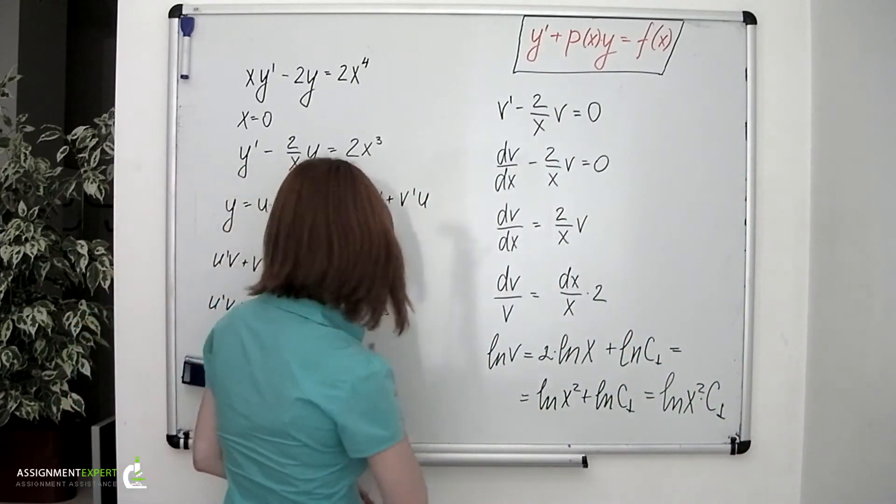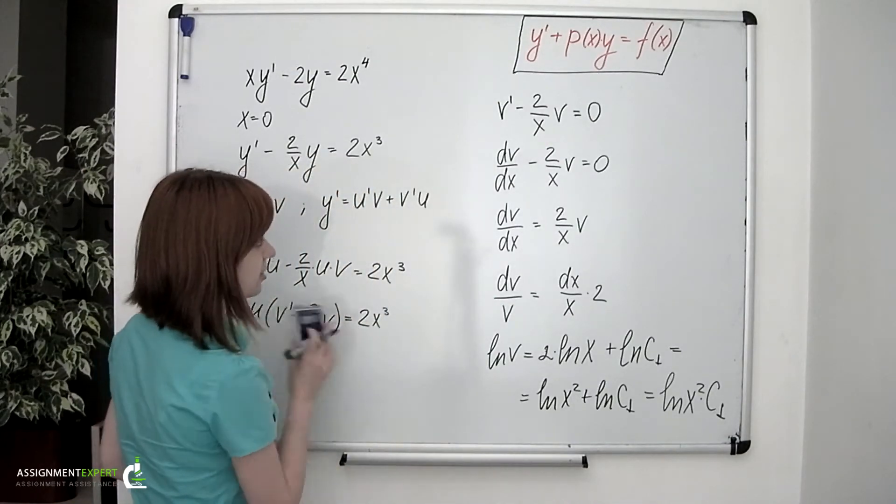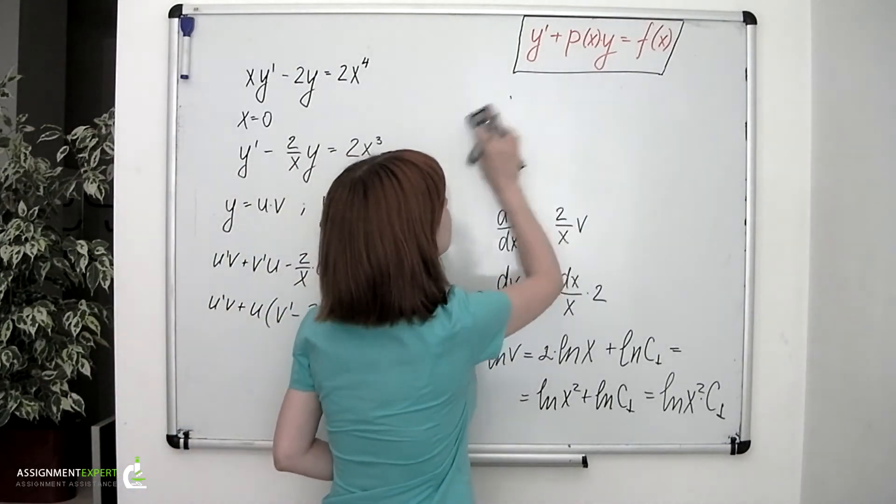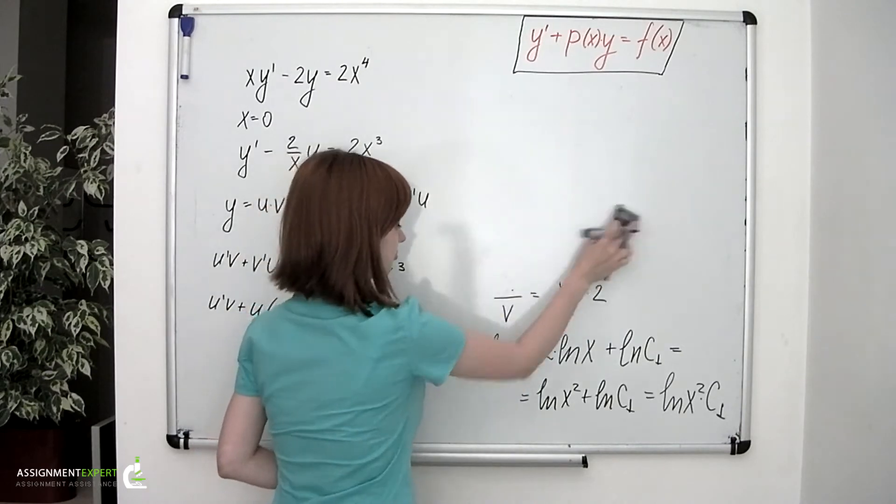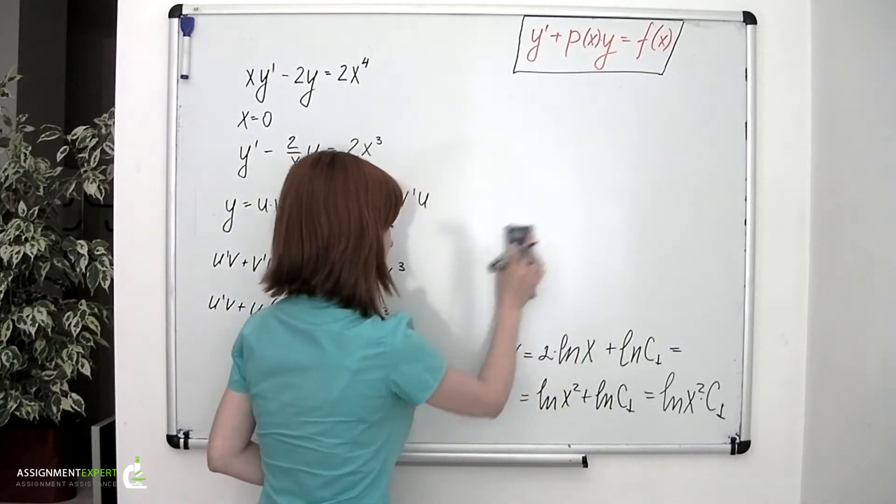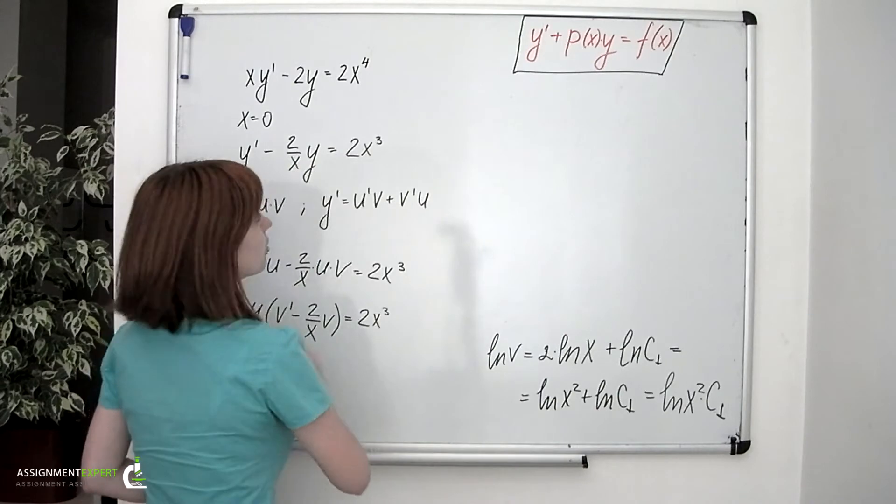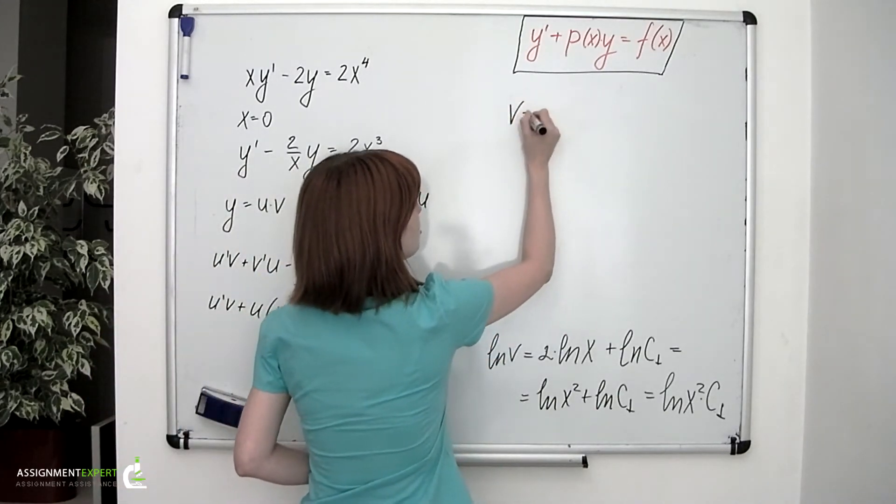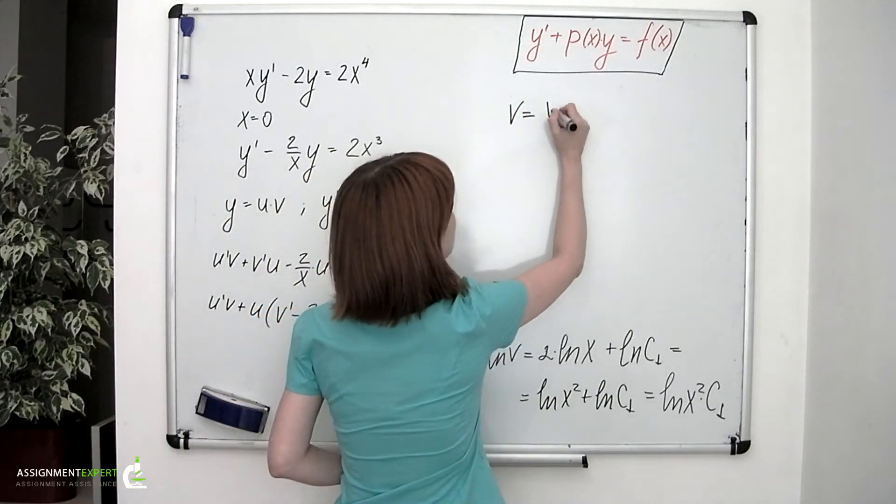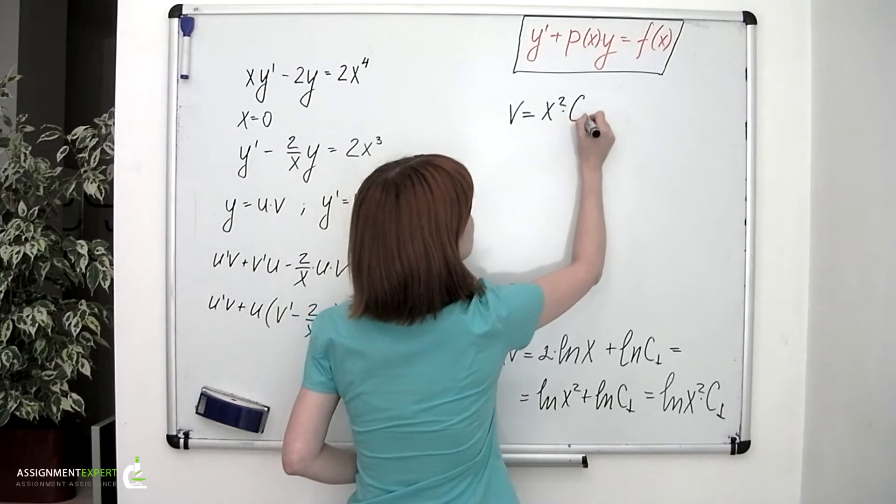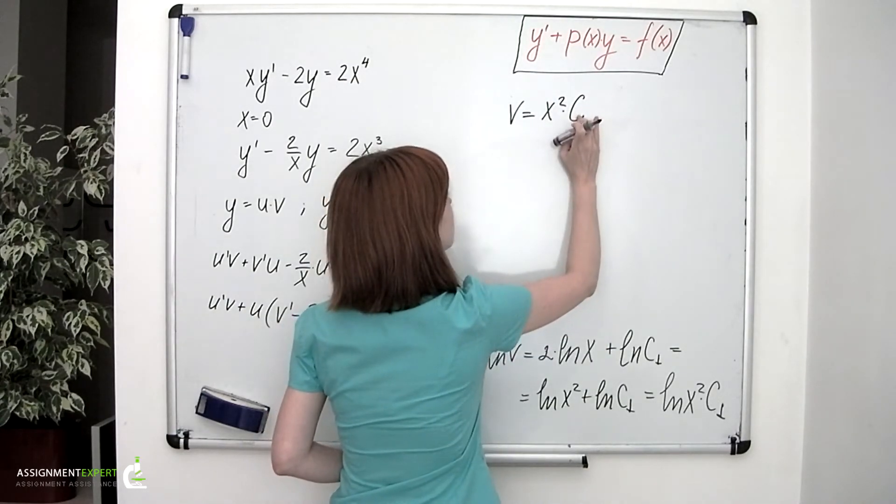And then finally, we can find the v function, which is equal to x squared times the constant, c sub 1.